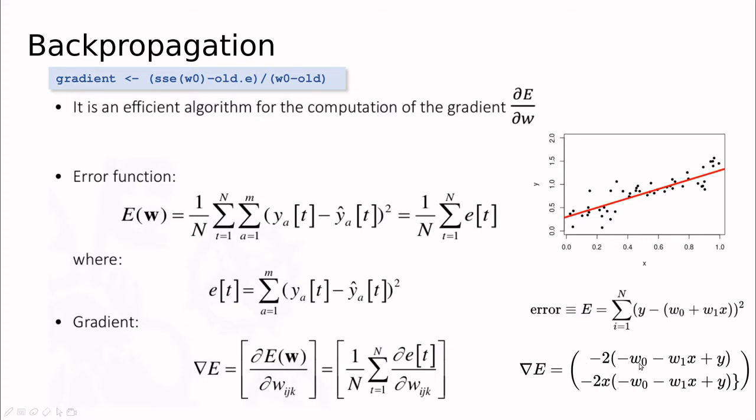So the first element is the partial derivative of this with respect to w0, and the second element is the partial derivative with respect to w1.